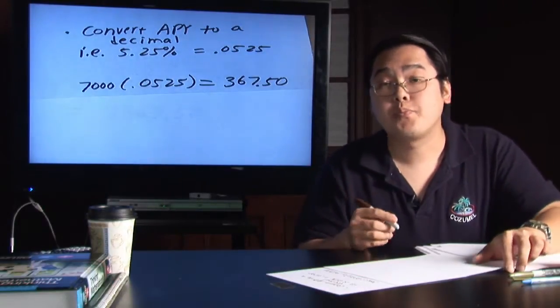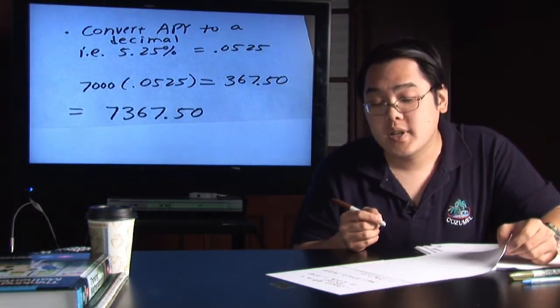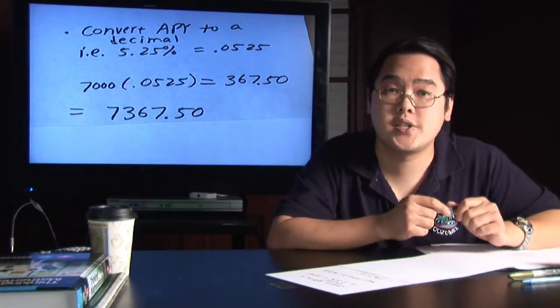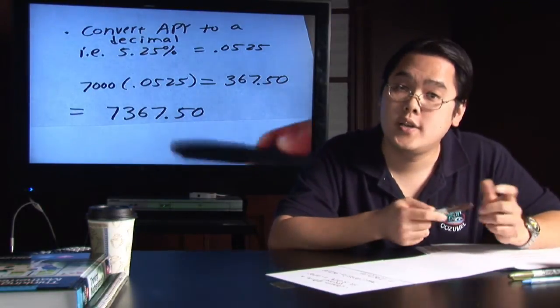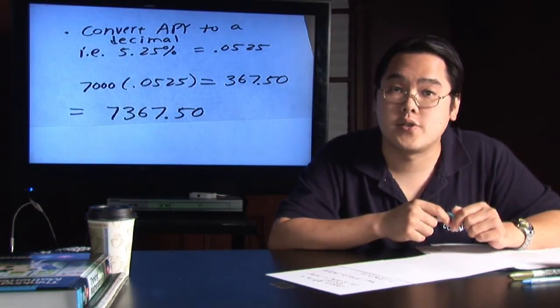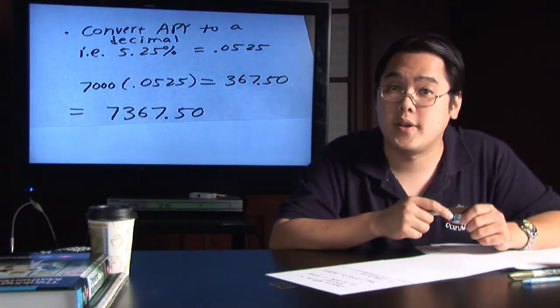Which means by the end of that year, your total balance should be $7,367.50. Again, over $350 of that, the bank paid you to keep your money there.